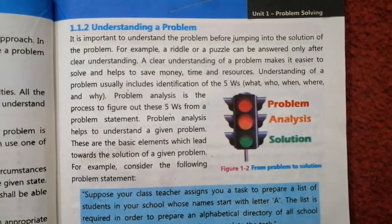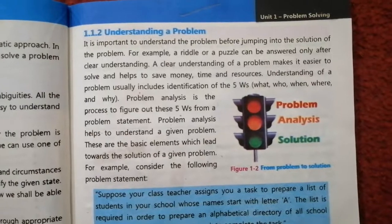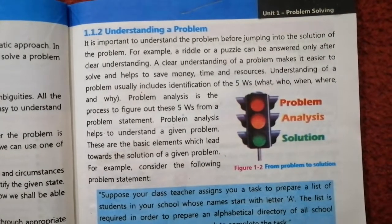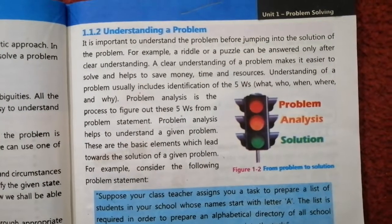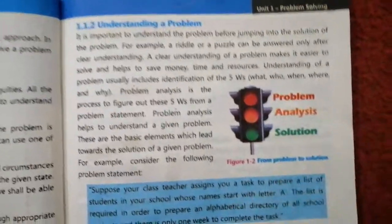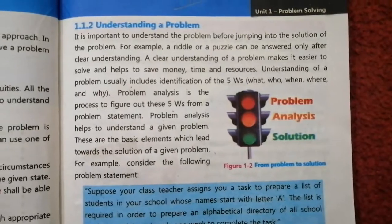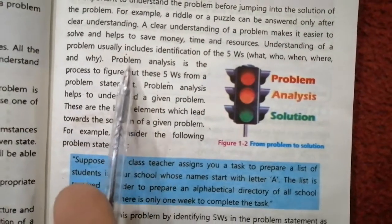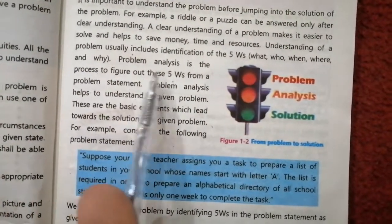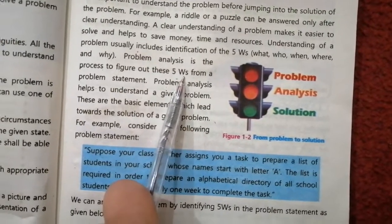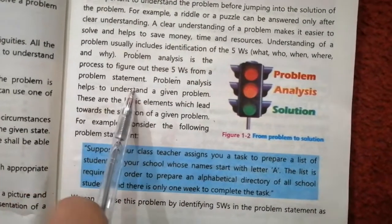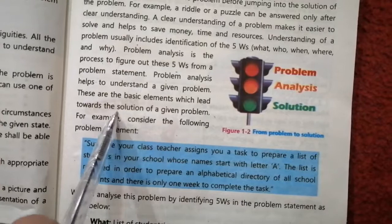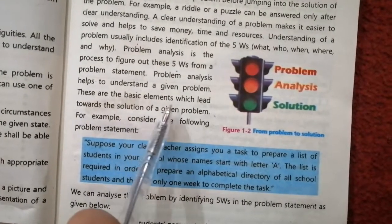To understand a problem, you usually need to identify the five W's. If you need to find any problem, you need to know about the five W's: What is the problem? Who? When? Where? And Why? Problem analysis is the process of figuring out these five W's from a problem statement. These are the basic elements which lead towards the solution of the given problem.